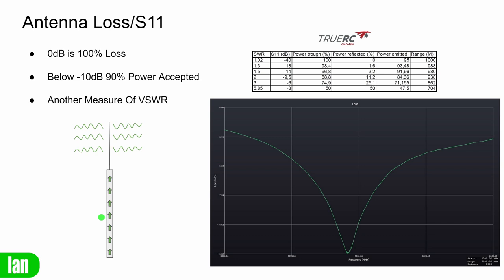Another term you may hear alongside SWR is S11, or what is known as return loss. It is another expression of SWR — a measurement of the loss of power as a result of the SWR level. It is generally used in more technical aspects of measuring antenna performance but is probably a better way of understanding how an antenna is actually performing from a tuning point of view. For example, a VTX with 100 milliwatts attached to an antenna with an SWR of 1.9 to 1 means 100 milliwatts goes in and 10 milliwatts is reflected back. That 10 milliwatts is 10 times less power than was put in, so it would be shown as minus 10 dB on the S11 chart, leaving 90 milliwatts to potentially be radiated.